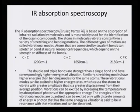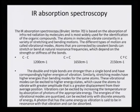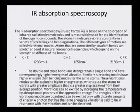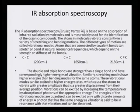IR absorption spectroscopy is based on the absorption of IR radiation by molecules — dyes are also organic molecules — and is most widely used for the identification of organic compounds. The atoms in molecules vibrate constantly in a variety of stretching and bending motions, called vibrational modes. Atoms connected by covalent bonds can stretch or bend at natural resonance frequencies depending on the strength or stiffness of the bond. A single C-C bond shows a vibration mode at 1200 cm⁻¹, a carbon-carbon double bond at 1650 cm⁻¹, and a carbon-carbon triple bond at 2100–2200 cm⁻¹.